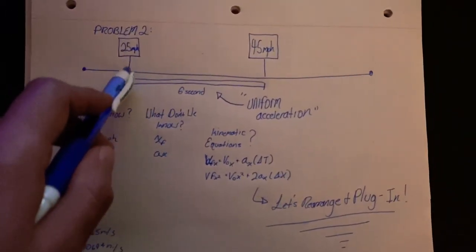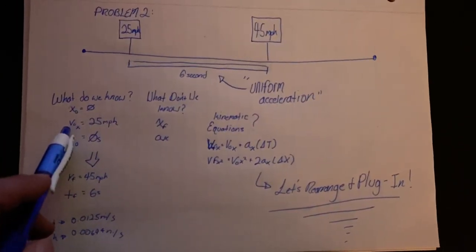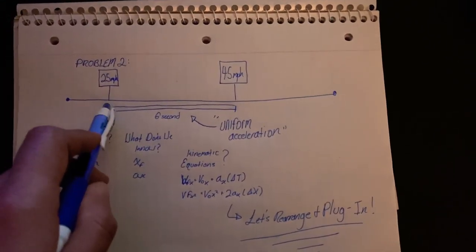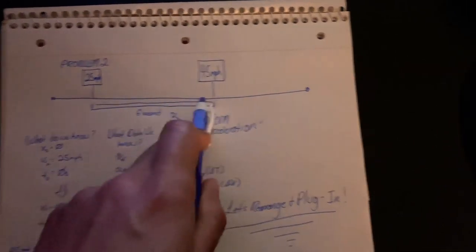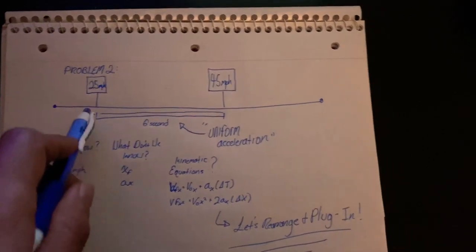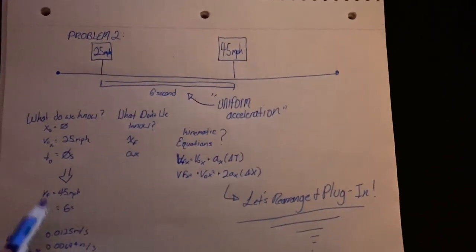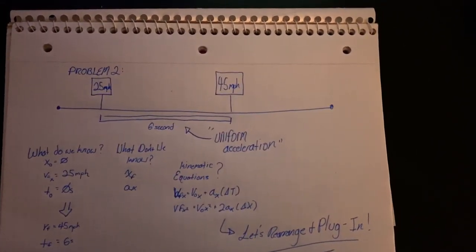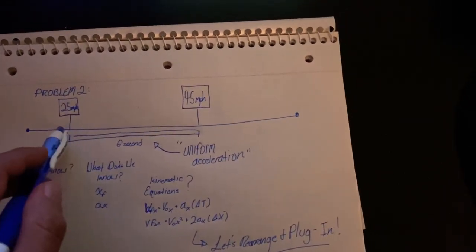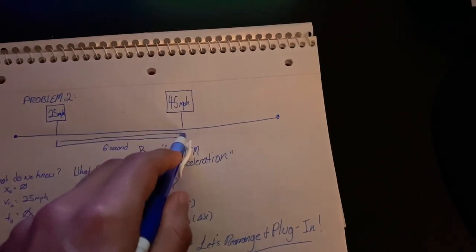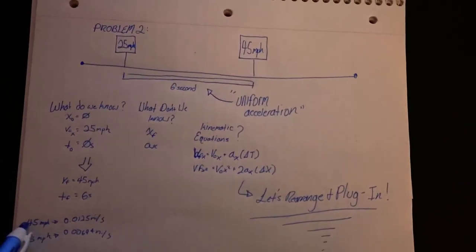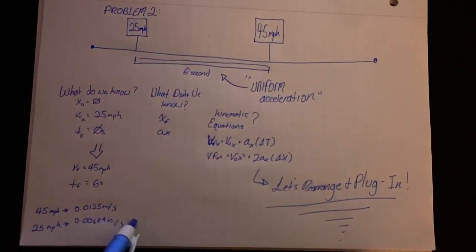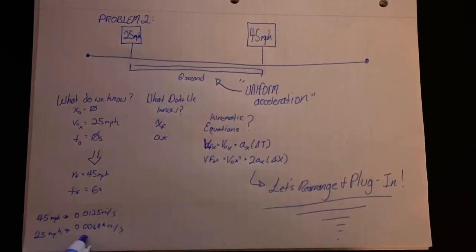We know the starting position is x0 because we're trying to solve from here to here. We know that her initial velocity is 25 miles per hour — she's not starting from rest, she's starting from 25 miles per hour and speeding up to 45 miles per hour at a constant rate. We know that our initial time is zero, our final velocity will be 45 miles per hour, and that the final time is six seconds. We convert: 45 mph becomes 0.0125 miles per second, and 25 mph becomes 0.00694 miles per second.